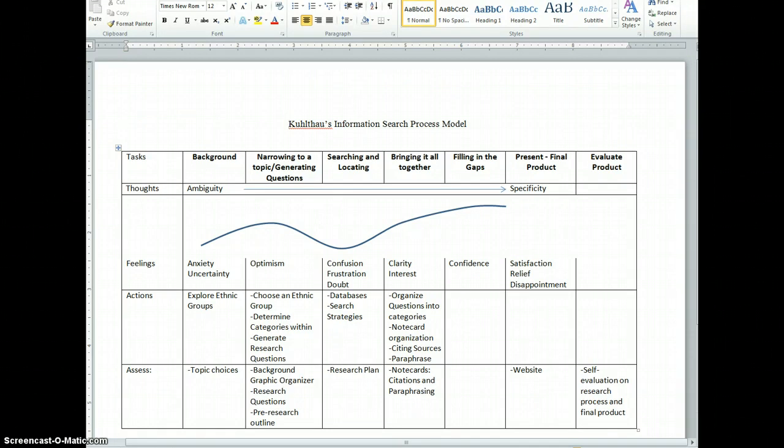So what you're looking at here is an information search process, or basically the research process. It is a chart that at the beginning can look confusing, but I'll take you through it and tell you about what our research process over the next three and a half or four weeks will look like.